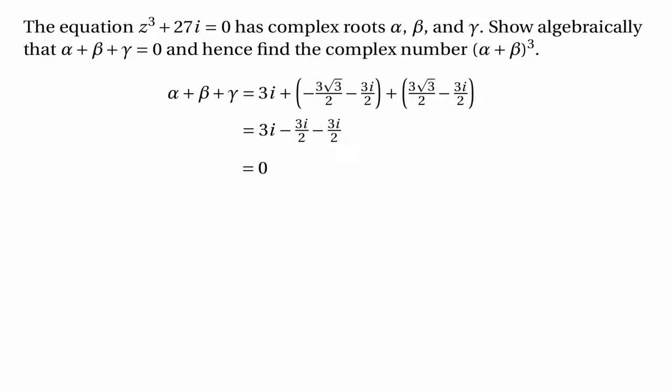The next bit is a little trickier. Since alpha plus beta plus gamma equals zero, we can say that alpha plus beta is equal to minus gamma. Now we can cube both sides: the cube of alpha plus beta must be the cube of minus gamma. But the cube of minus gamma would be minus the cube of gamma. And the whole point of gamma is that its cube is minus 27i, so this is minus(−27i), or simply 27i. Therefore the cube of alpha plus beta is 27i.